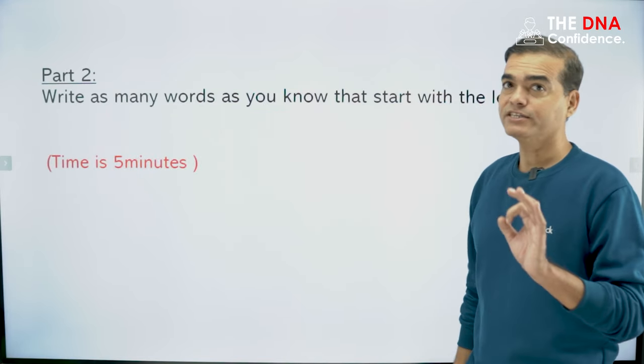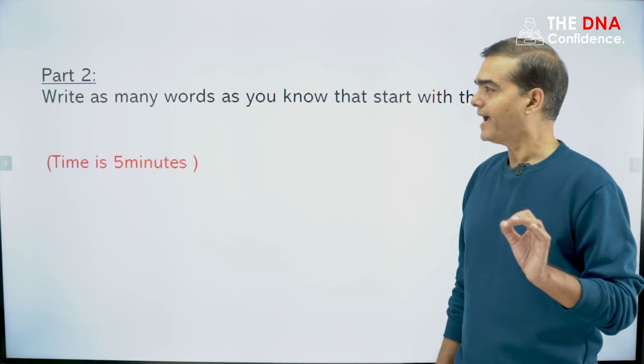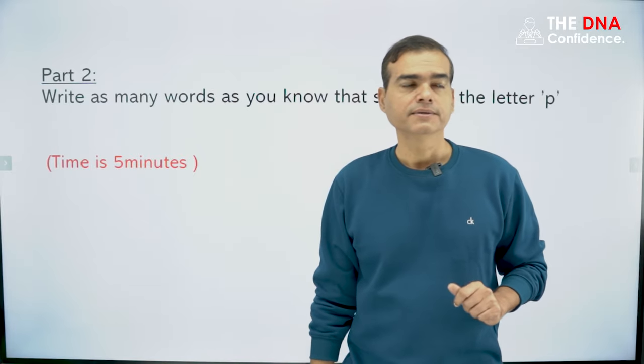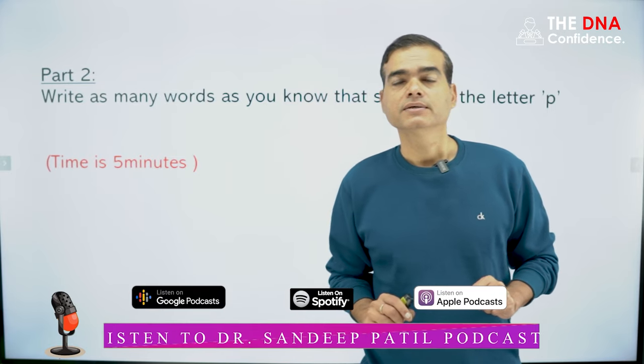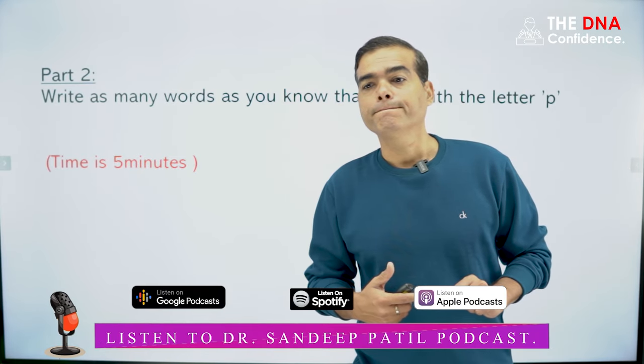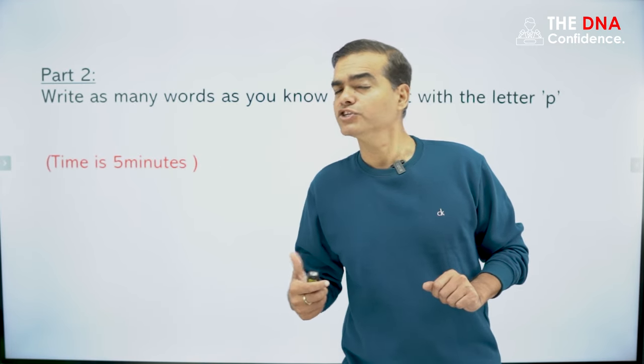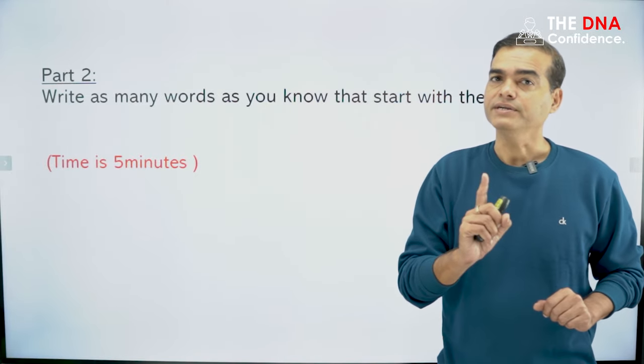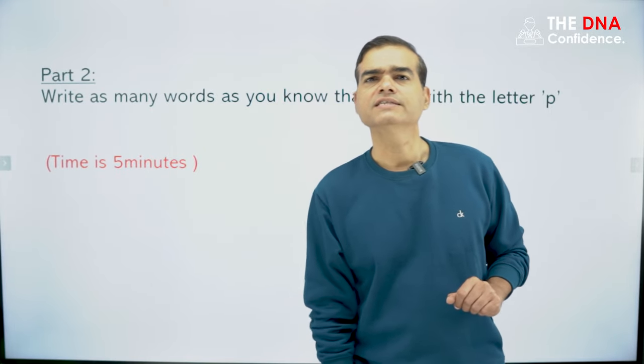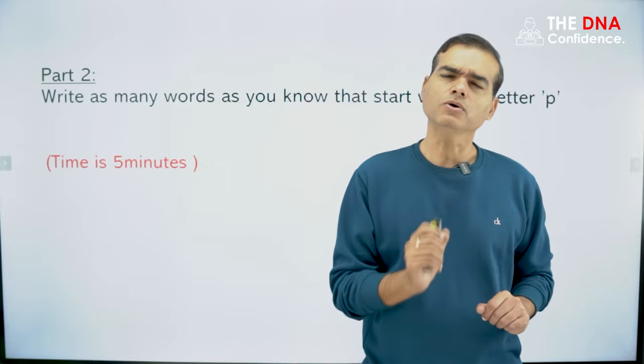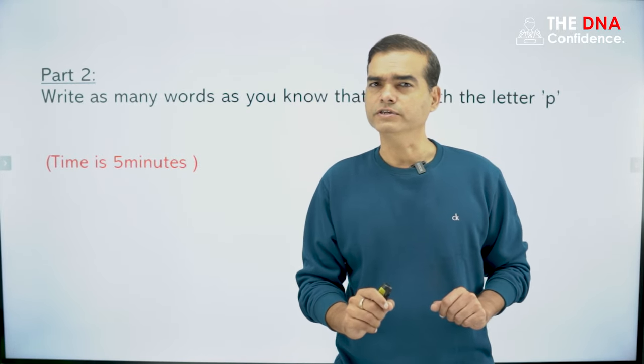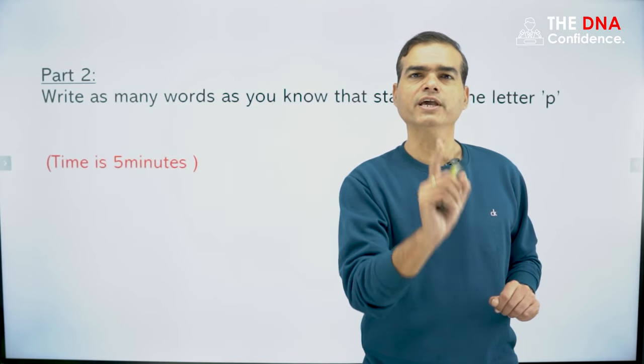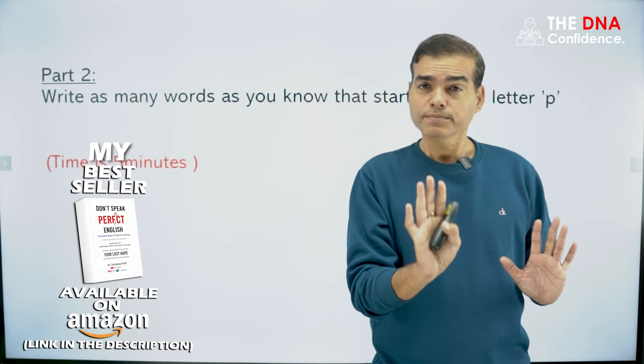So now let us come to part two. In part two, what you have to do is you have to write as many words as you know that start with the letter P. For example, persuade, pause, pilgrimage. All these words you have to write. But there is a constraint. You will be given five minutes. In five minutes, write down all the words starting with P. Let us see how many words you can write. Set the time and start doing it now.